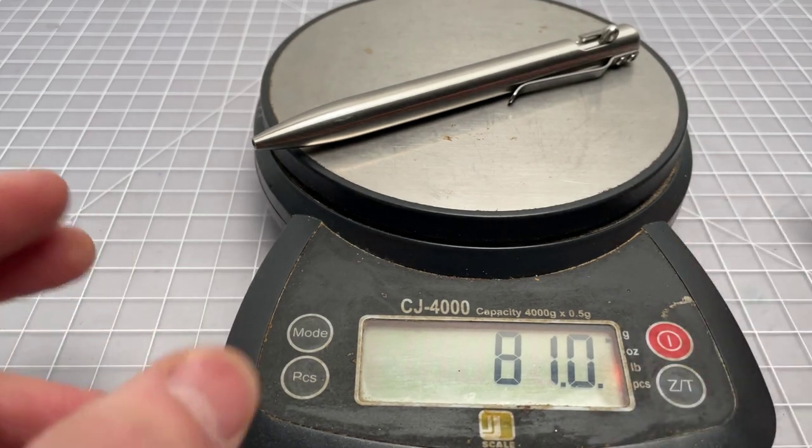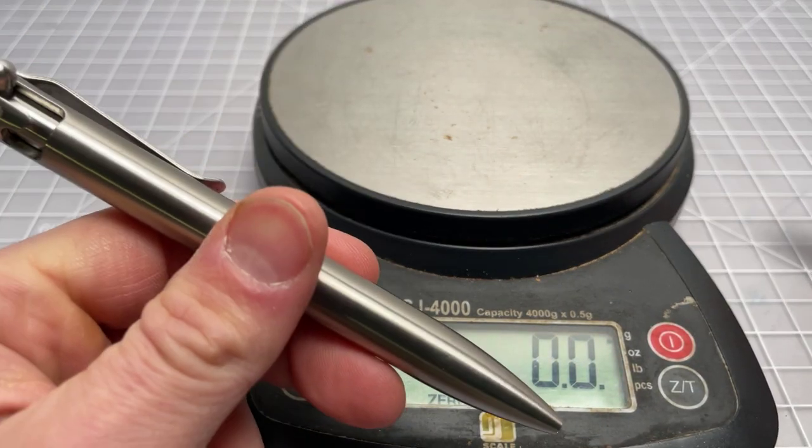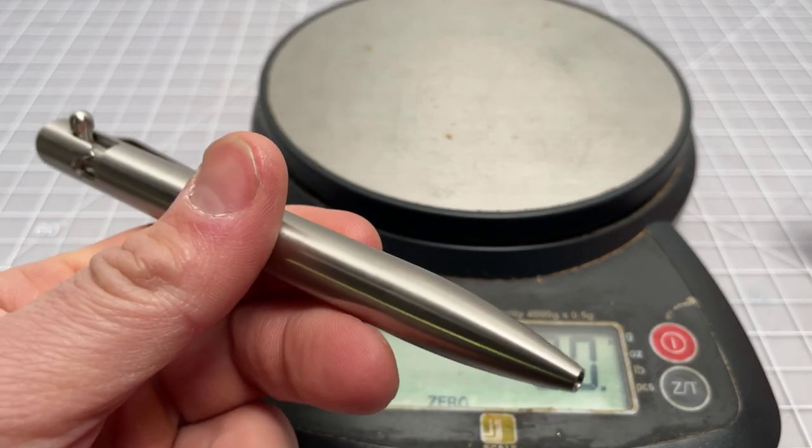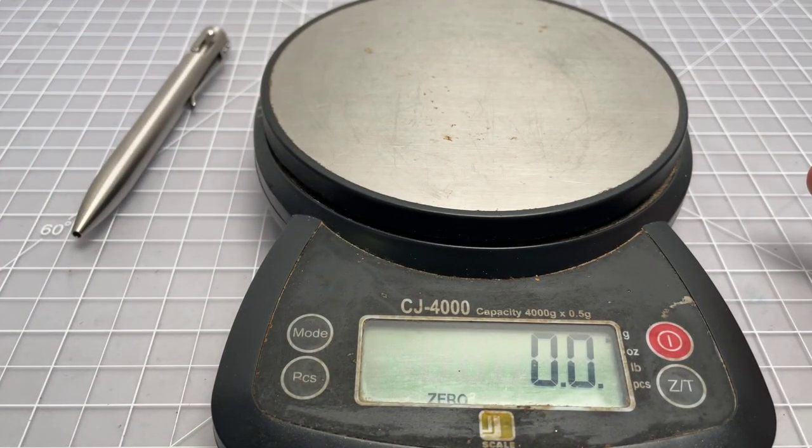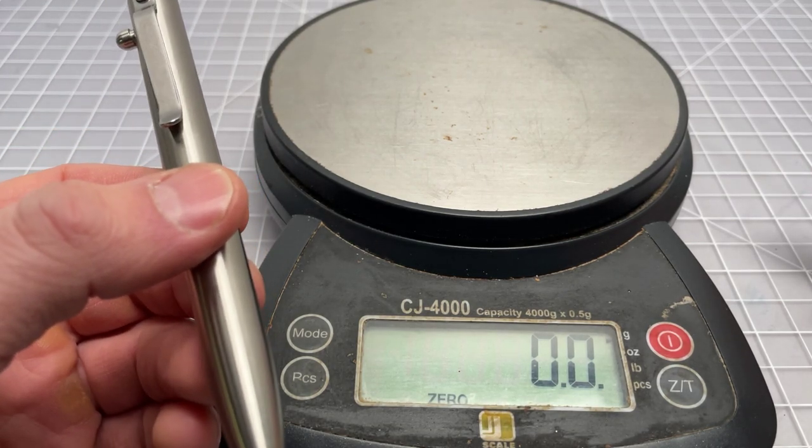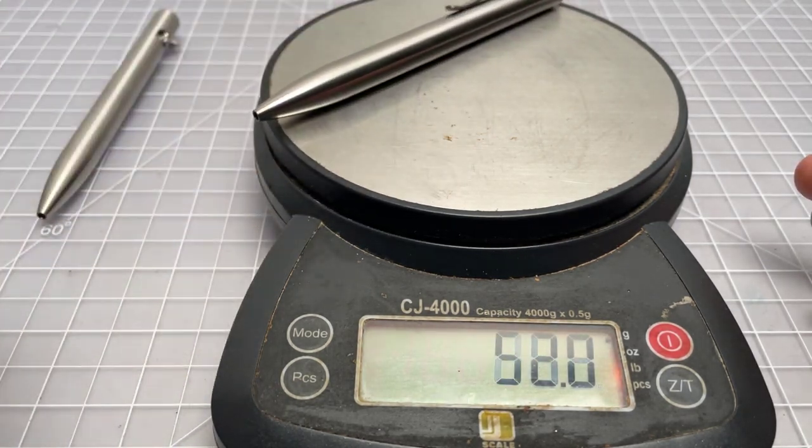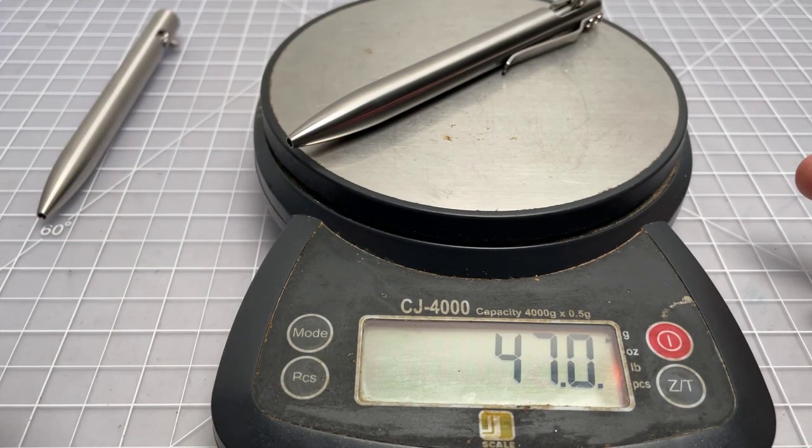So weight-wise, this is the stainless steel, 81 grams. This is a hefty pen. For me, this is uncomfortably hefty. You could use it for some light note-taking. You don't want to write a lot with an 81-gram pen, and you certainly can't really put it in your pocket or anything like that. It's kind of just going to go into a bag.